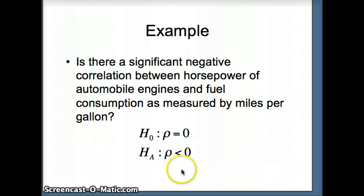H0 rho equals 0 versus HA rho is less than 0. So if we had all the cars, all their horsepower, and all their MPGs, that's what the rho would be. That would be the correlation for all cars. We just have a random sample.